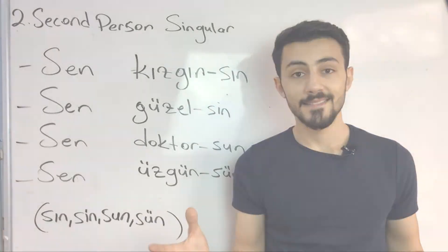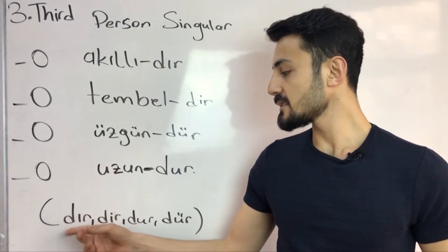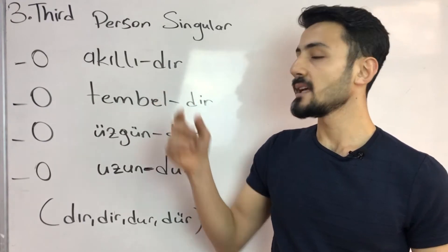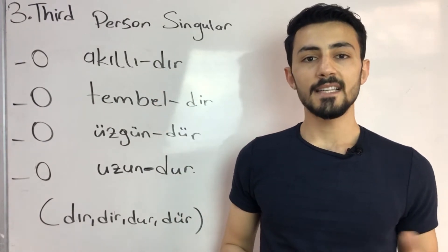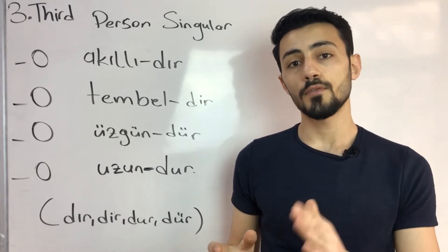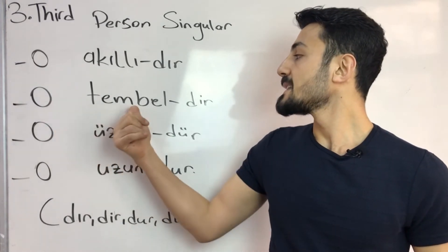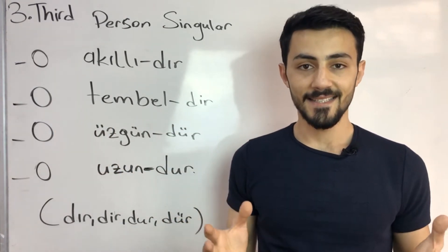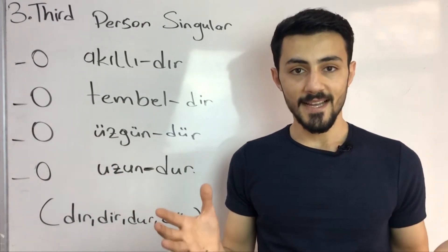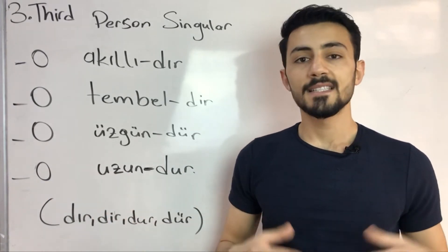In third person singular the suffixes are dır, dir, dur, dür. O akıllıdır - He is clever. Actually we don't have a gender in Turkish like he or she. We just say O for women, for men. Just we say O. O tembeldir - He is lazy. O üzgündür - He is upset. O uzundur - She is tall.